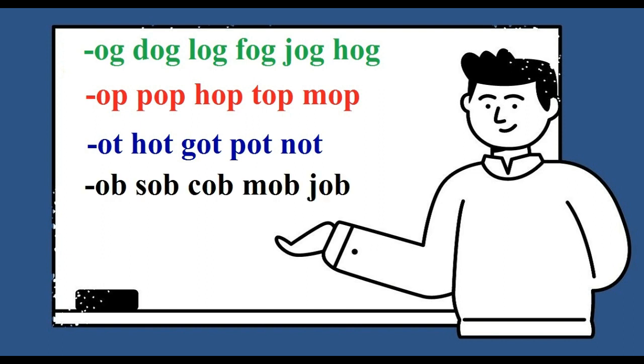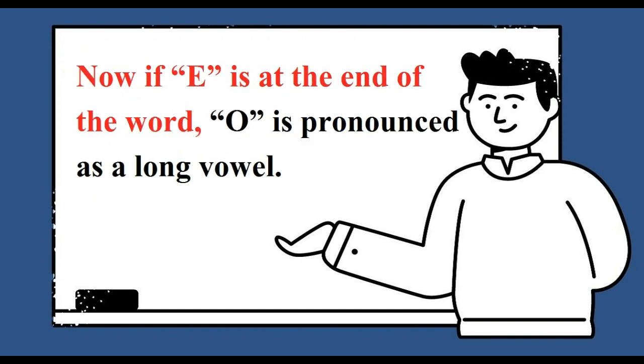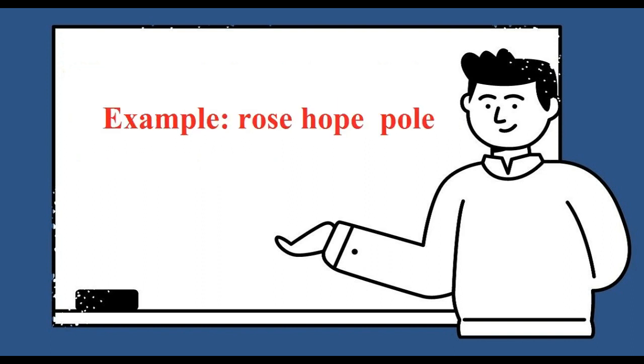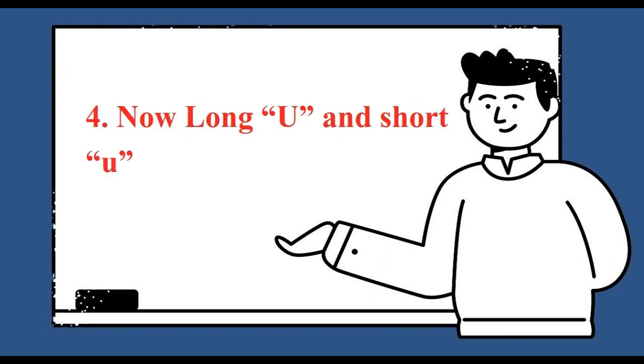Ob, sob, cob, mob, job. Now if E is at the end of the word, O is pronounced as a long vowel: rose, hope, pole.